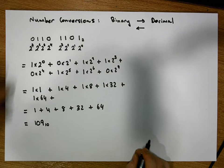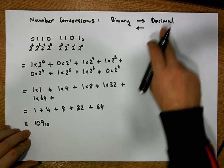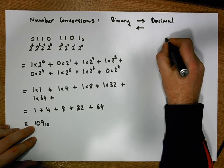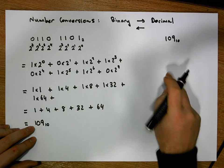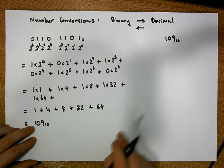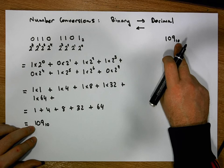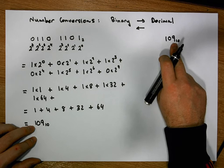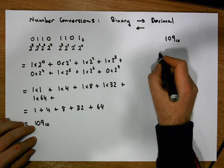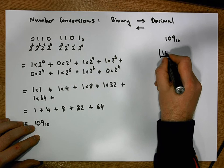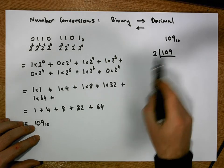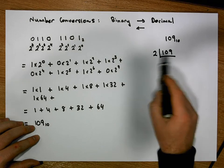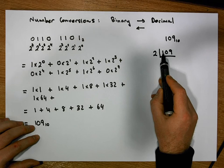Let's reverse this process and convert from decimal to binary. We'll take the decimal number 109 in base 10 and convert it back to binary in base 2. The technique is to successively divide 109 by 2, keeping track of how many times 2 goes in, but more importantly keeping track of the remainder after each division.